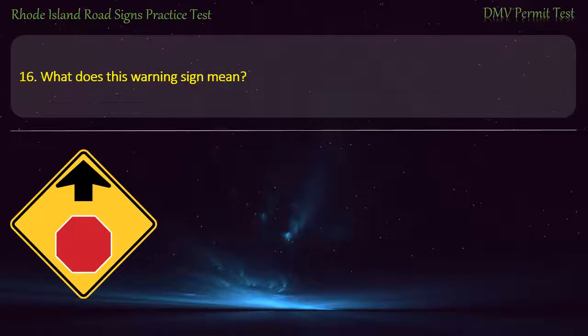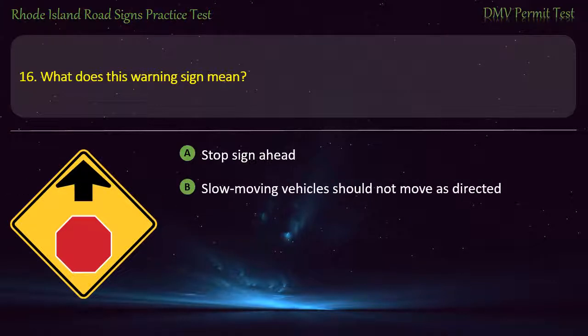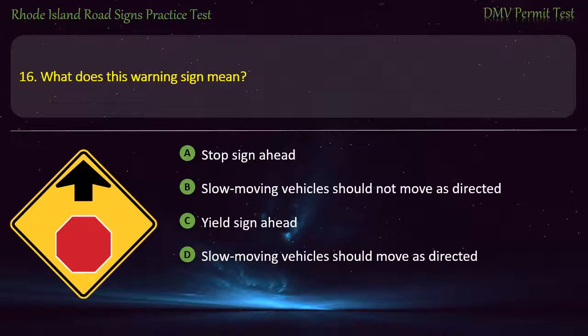Question 16. What does this warning sign mean? Stop sign ahead — so moving vehicles should not move as directed. Yield sign ahead — so moving vehicles should move as directed. Answer: Stop sign ahead.